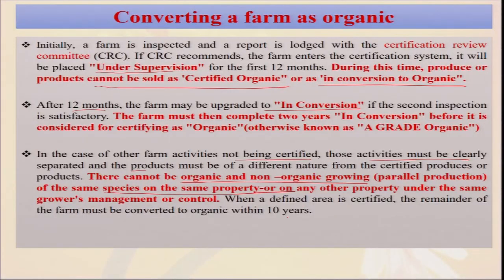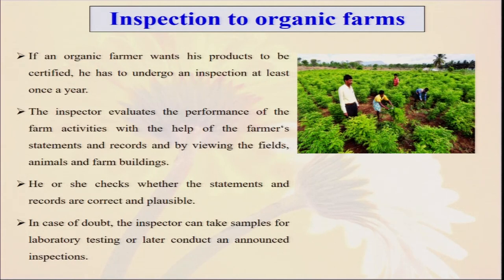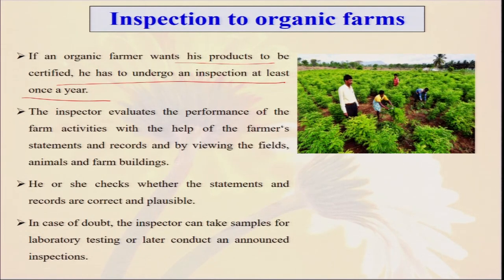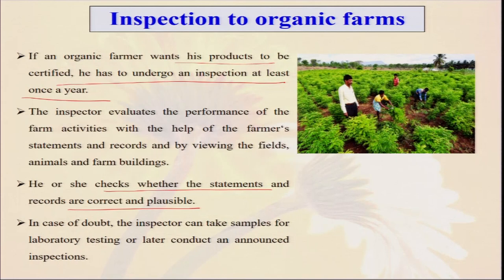Within a defined certified area, conversion must happen within 10 years. Inspection may occur any time, so farmers must keep their fields clean. An organic farmer wanting certification must undergo inspection at least once a year. Inspection is done by field inspectors recruited by national agencies given responsibility by APEDA for third-party certification. The inspector evaluates the farm activities using the farmer's statements and records, viewing the fields, animals, and surroundings — checking whether statements are correctly recorded and whether the farmer is doing things properly.